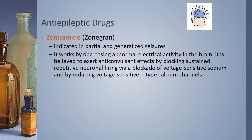Zonisamide, or Zonegran, is indicated in partial and generalized seizures. It works by decreasing abnormal electrical activity in the brain. It exerts anticonvulsant effects by blocking sustained repetitive neural firing via blockade of voltage-sensitive sodium channels and by reducing voltage-sensitive T-type calcium channels. Many of these drug levels are measured via immunoassays; some must be sent to reference labs. That concludes this review.